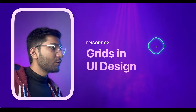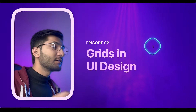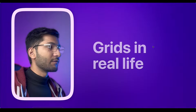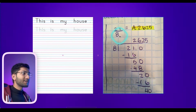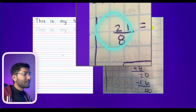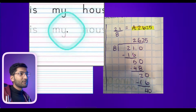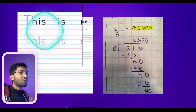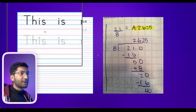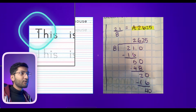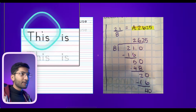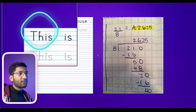Everything in UI design is picked from the real world and grid is also one of them. First let's see the example of grids in real world. If you remember in childhood we used to write on notebooks which contain pages something like this. This was a math notebook and this was an English notebook. The rules were simple — you just have to write over the grid. You cannot go outside the grid, like I cannot type a letter above the grid. I have to stick to the grid so that it will look beautiful.